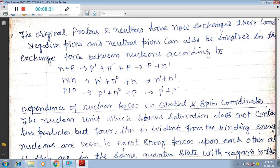Negative pions and neutral pions can also be involved in the exchange force between nucleons, according to N plus P converting into P-dash plus pi-minus plus P, and pi-minus plus P again converted into N-dash. So N plus P ultimately converted into P-dash plus N-dash.